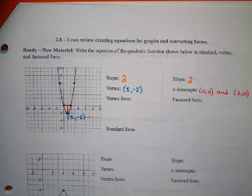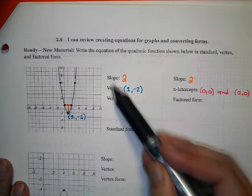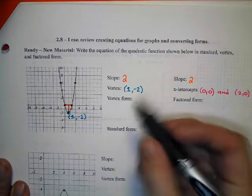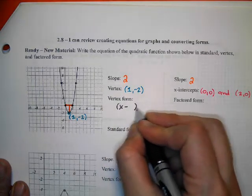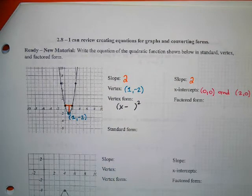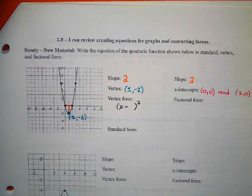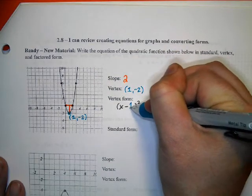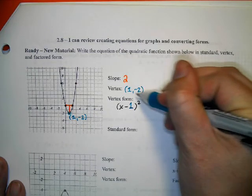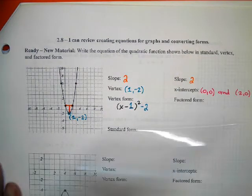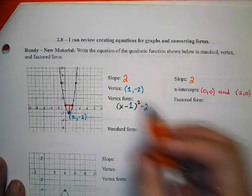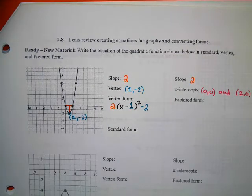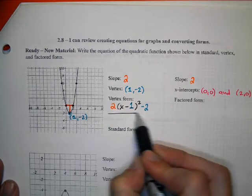When I build vertex form, I have all the data for vertex form. That means I can easily build x minus something squared for vertex form. This 1 is going to go in with the x. This -2 is going to be at the end. And then I need to check that my slope is at the front. The vertex form is done.